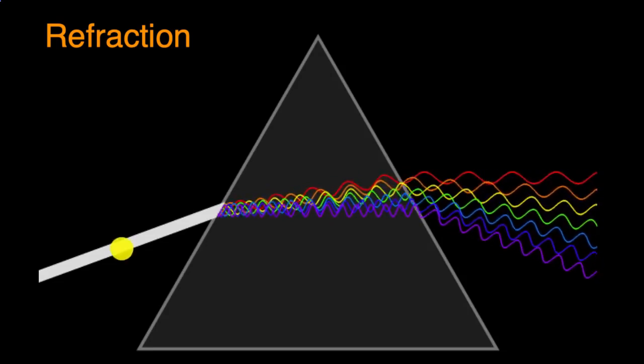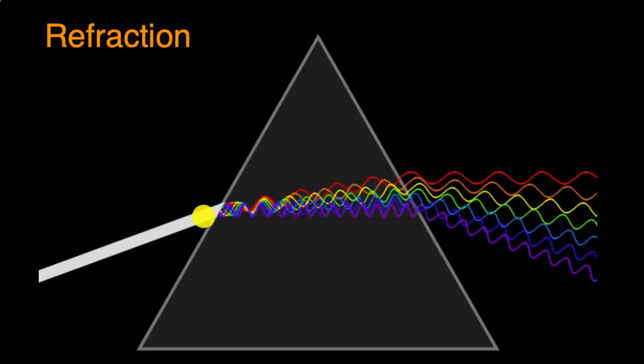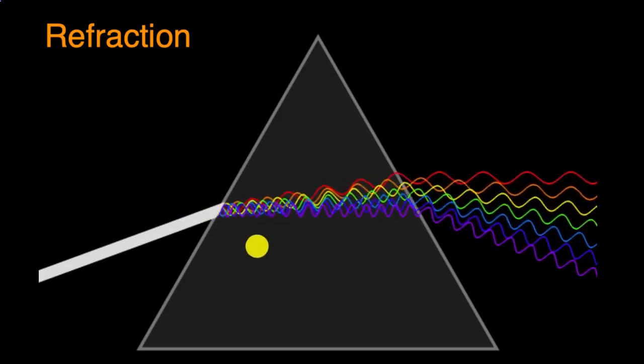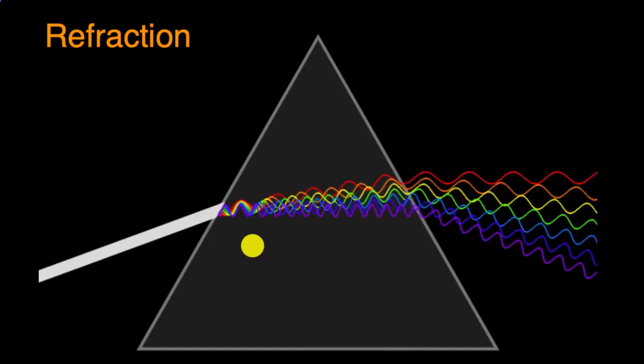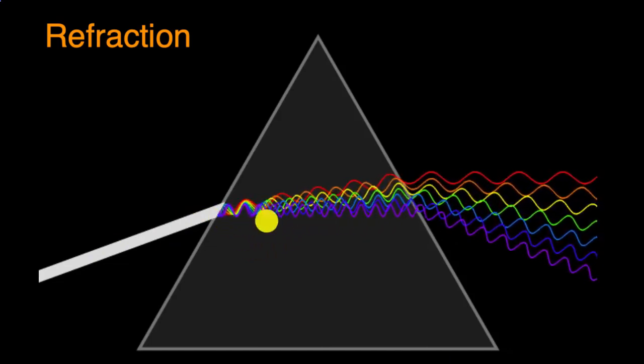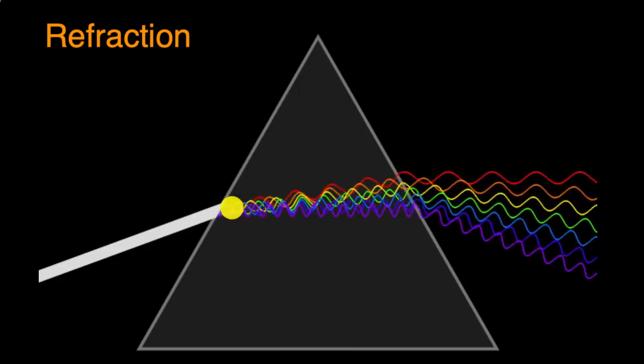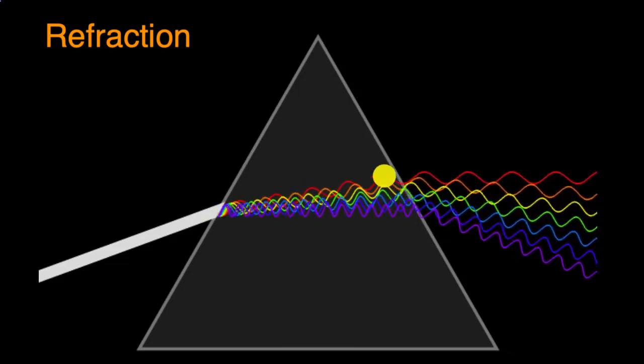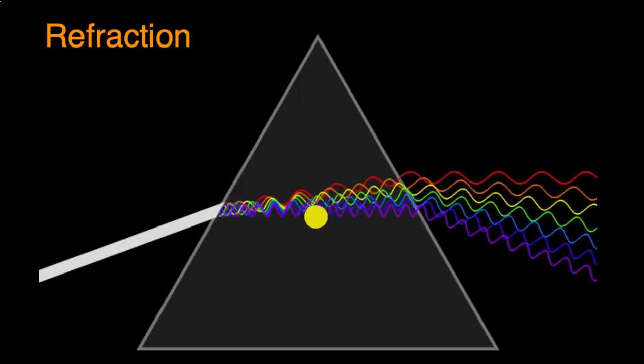But you can see as this light goes from, let's say the vacuum to this prism, to this crystal or this glass, the high frequency light gets bent more, and the low frequency light, which still gets bent, gets bent less. And then that essentially spreads out all of the wavelengths.